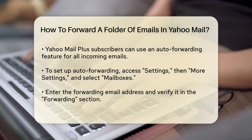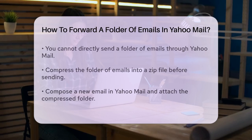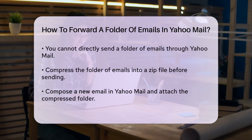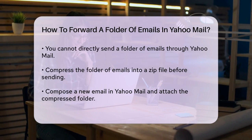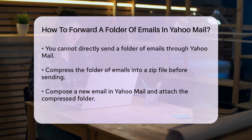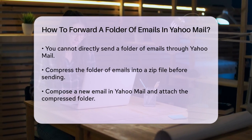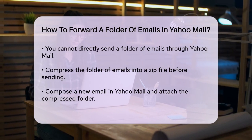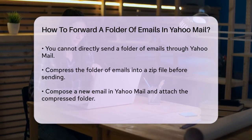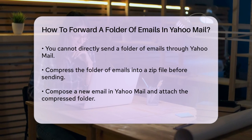To set up auto-forwarding, log into your Yahoo Mail account on the web. Click the Settings gear icon in the upper right. Select More Settings. On the left side, click Mailboxes. Under Mailbox List, select the address you want to set up forwarding for. Scroll down to the Forwarding section. Enter the email address where you want your emails forwarded and press Verify.